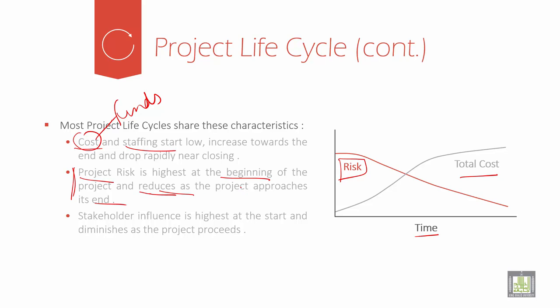Stakeholder influence is highest at the start and diminishes as the project progresses. Stakeholders are the partners in your company. Their influence is highest at the start because they are not familiar with your project. Then as the project smoothens, he is able to proceed in a very smooth manner.